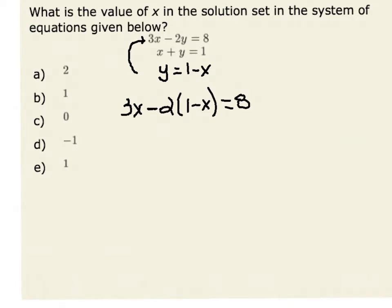Notice that I've now created an equation with only one variable. I could now use the distributive property to simplify the left-hand side. I have 3 times x, and now using that distributive property, I have a negative 2 times 1, or minus 2.